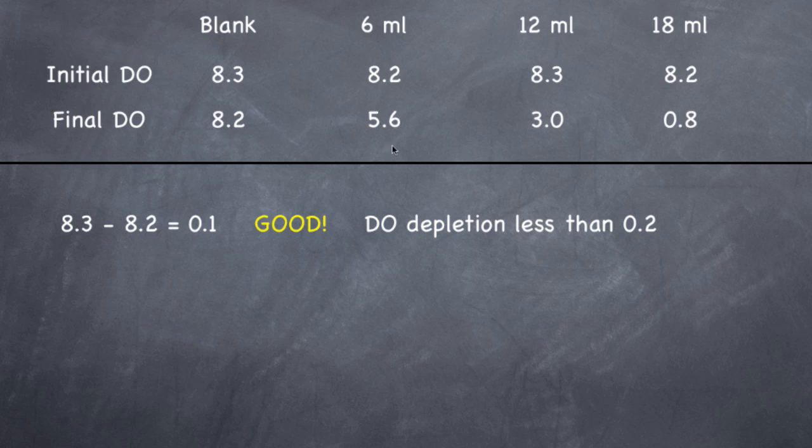All right, so now step 2. Let's find the DO depletion and make sure that we're within okay limits of this sample, this sample, and this sample.